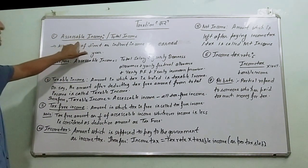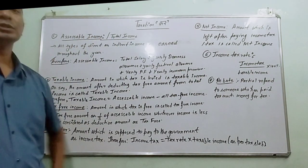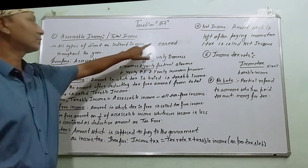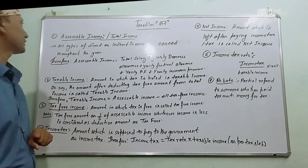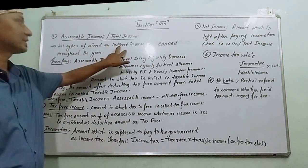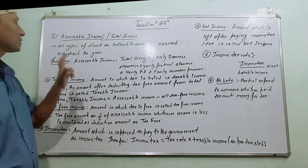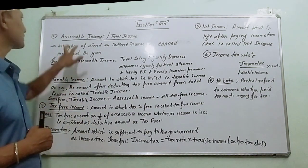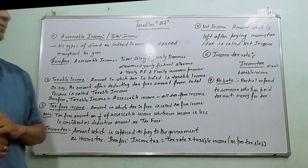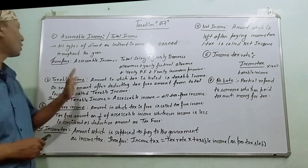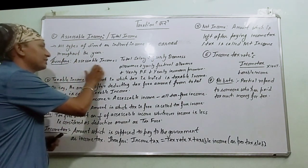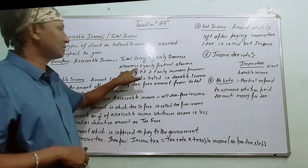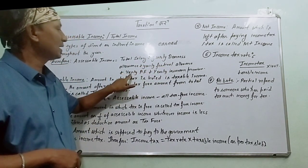Number 1 is Accessible Income, or Total Income. Accessible Income means all types of direct or indirect income earned throughout the year. Accessible Income equals Total Income plus Yearly Dearness Allowance plus Yearly Festival Allowance plus Yearly Provident Fund plus Yearly Insurance Premium.